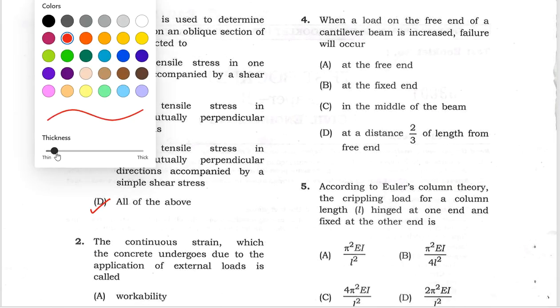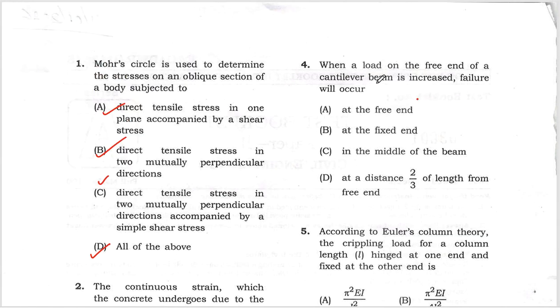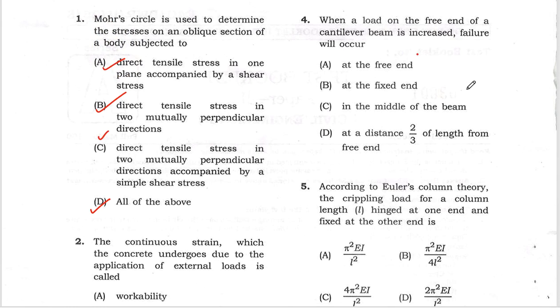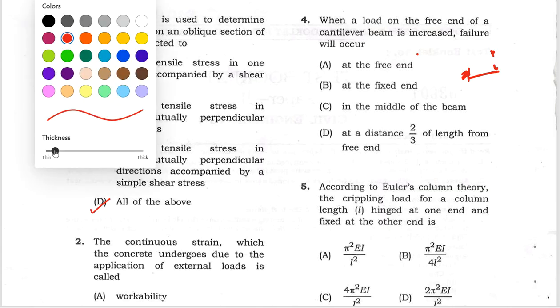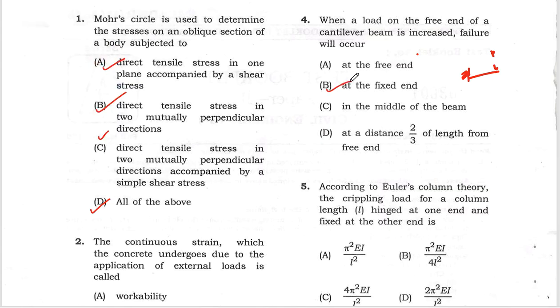Question 4: When a load on the free end of a cantilever beam is increased, failure will occur at the support or fixed end.